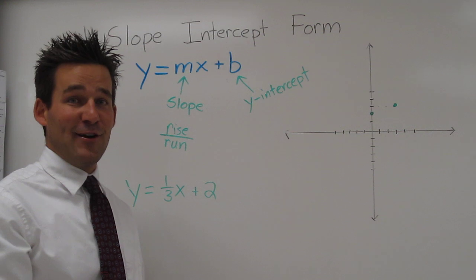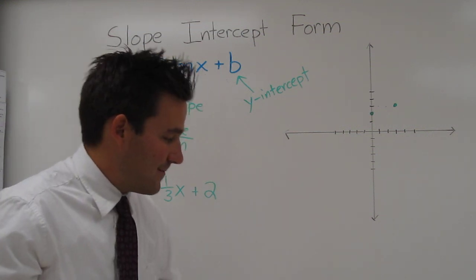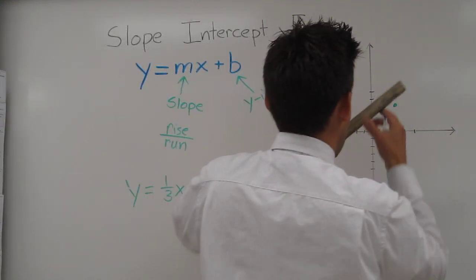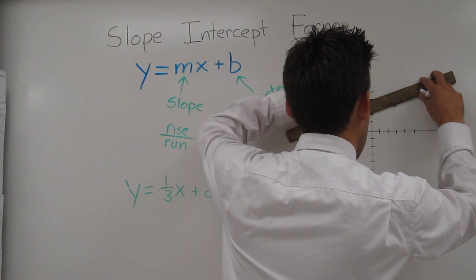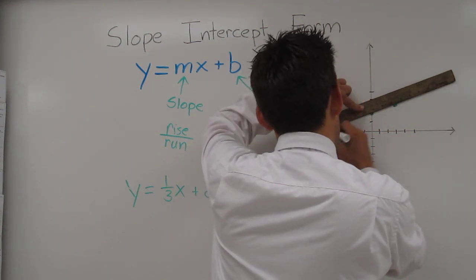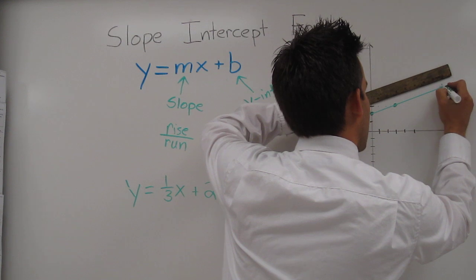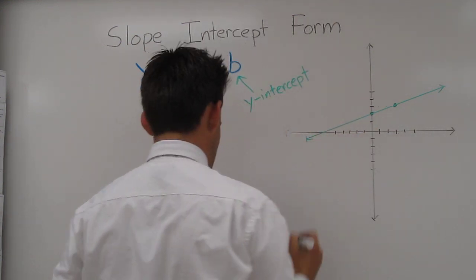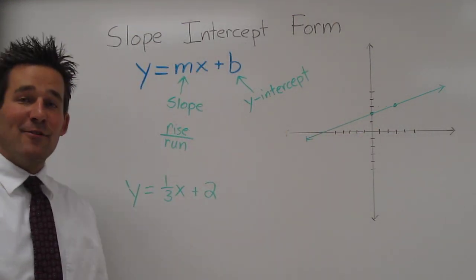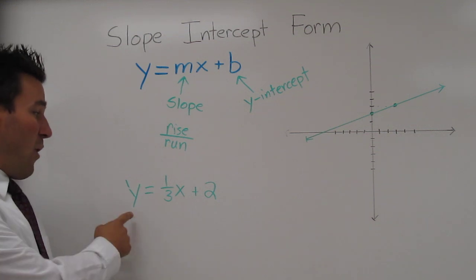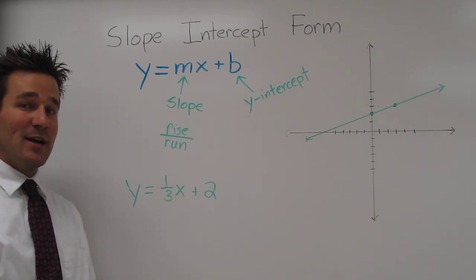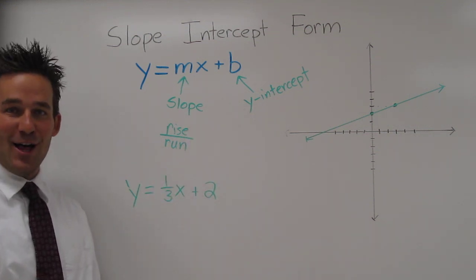Once we have 2 points, we can figure out what our line looks like. And there we have it. The graph of the line y equals one-third x plus 2 looks like that. Alright, good luck.